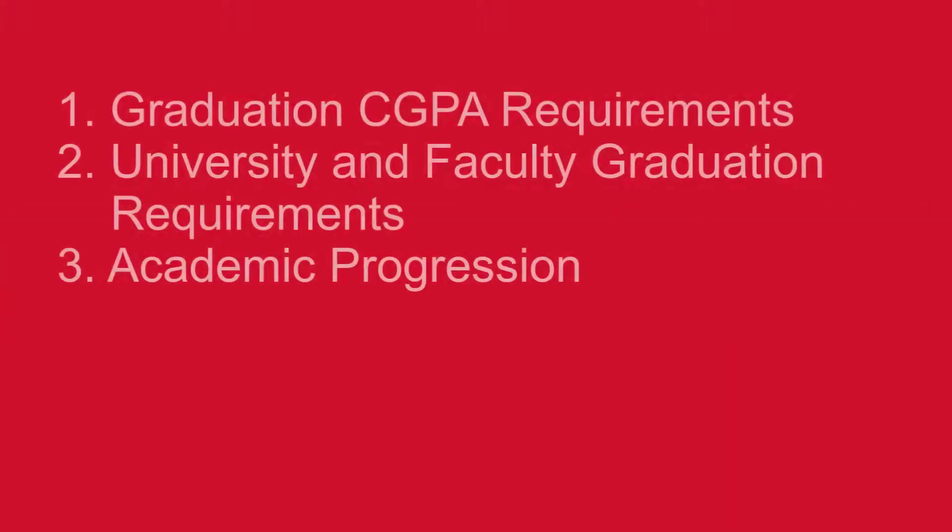The three main sections of the Academic Status Report are: Graduation CGPA Requirements, University and Faculty Graduation Requirements, and Academic Progression.